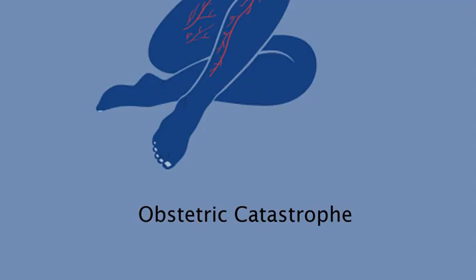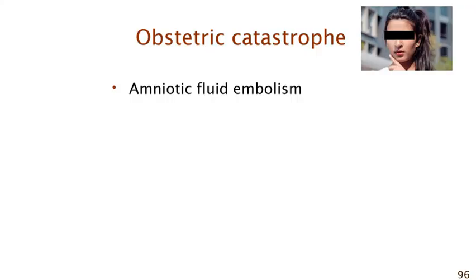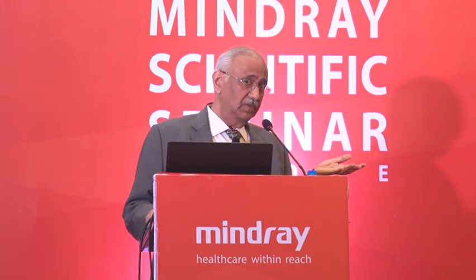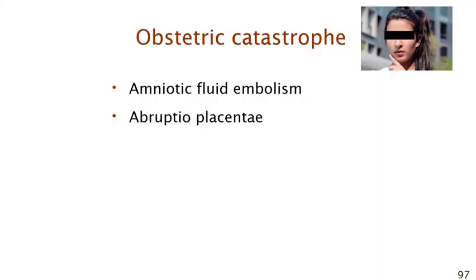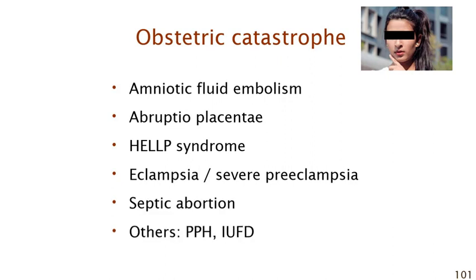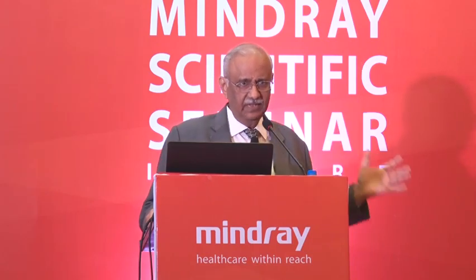Obstetric conditions predisposing to DIC include amniotic fluid embolism (listed first because it is fatal), abruption placentae (the commonest cause), HELLP syndrome, eclampsia and severe pre-eclampsia, septic abortion, PPH, and intrauterine fetal death leading to a macerated fetus causing chronic DIC. There is a time profile from the first trimester (septic abortion) through the second trimester (sepsis or DTP) right up to the peripartum period.